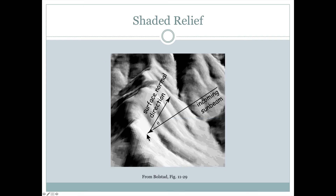We basically start with a digital elevation model, or a series of grid cells, and then we find out for each of those grid cells which way would be the perpendicular direction — sometimes we call that the surface normal.